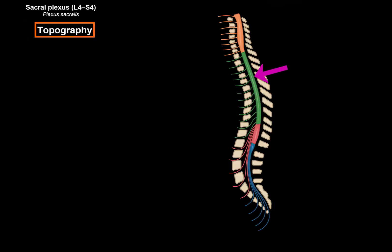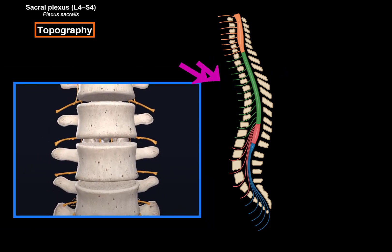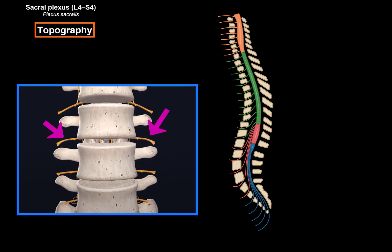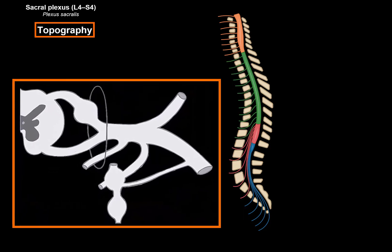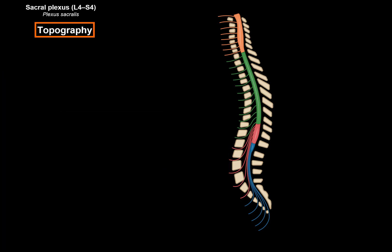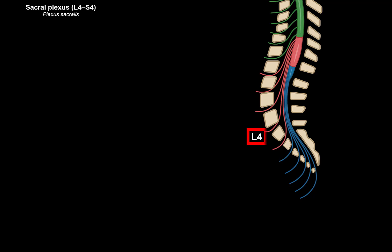Here we see the spinal nerve within the vertebral canal, and here we see the spinal nerve leaving the intervertebral foramen — one spinal nerve on each side. We're talking specifically about the anterior branch of the spinal nerve, because the anterior branch is what forms all the plexuses. The sacral plexus is formed from the anterior branches of spinal nerves L4, L5, S1, S2, S3, and S4.